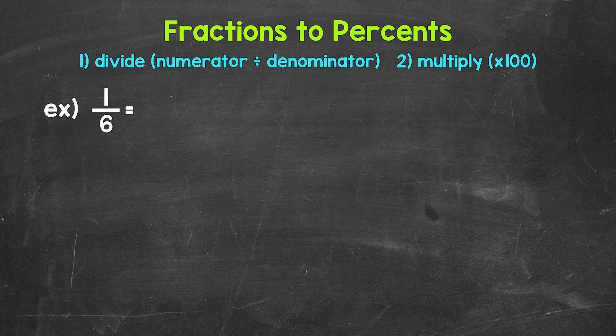Now when we convert a fraction to a percent, we can start by dividing the numerator, the top number of the fraction, by the denominator, the bottom number of the fraction. This will give us a decimal.